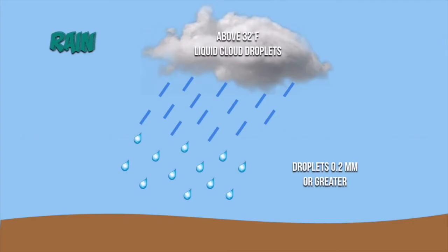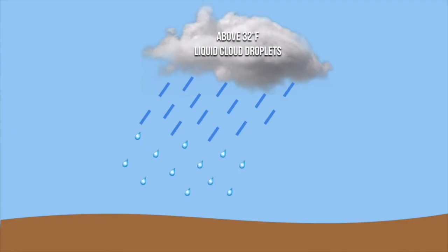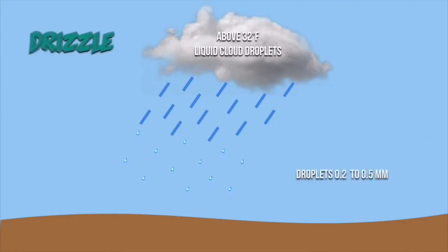For it to be considered rain, the droplets have to be bigger than 0.2 millimeters. If the droplets are smaller than 0.2 millimeters, we call that drizzle — much smaller rain droplets.